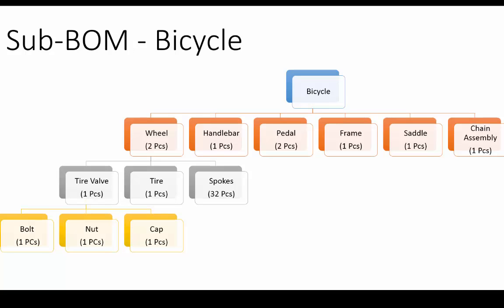Let us understand what a sub-BOM is. In simple words, a sub-BOM is a BOM within a BOM. When a BOM contains another BOM as its component, it is known as a multi-level BOM or a BOM with a sub-BOM. For example, in the bicycle BOM, the wheel is again made up of tire, tire valve, and spokes — hence wheel is called a sub-BOM or sub-assembly. Again, tire valve is made up from bolt, nut, and cap — hence tire valve is called a sub-BOM to wheel. Sub-BOM items can be independently sold, tracked, produced, or purchased.